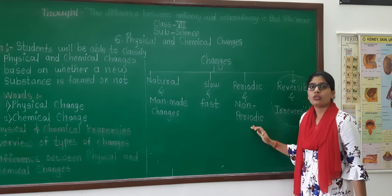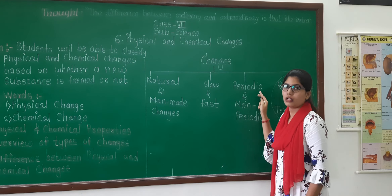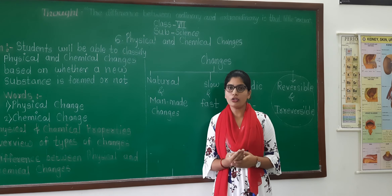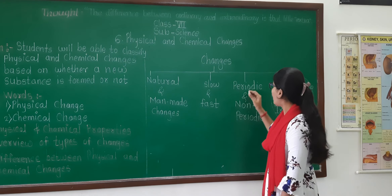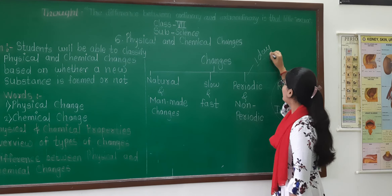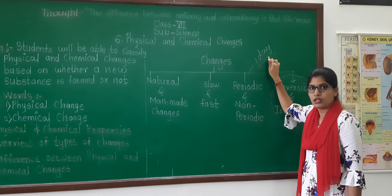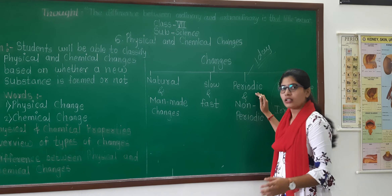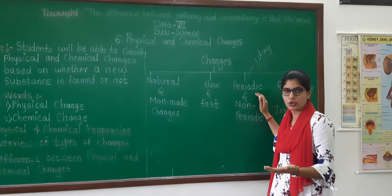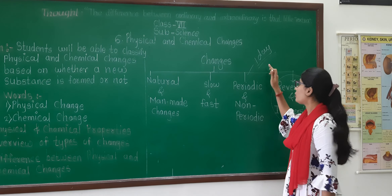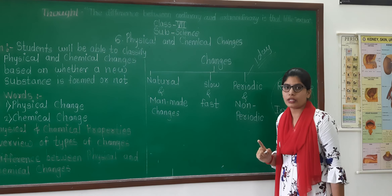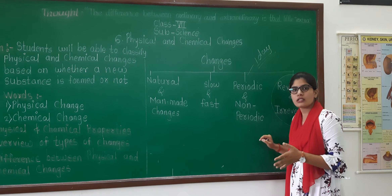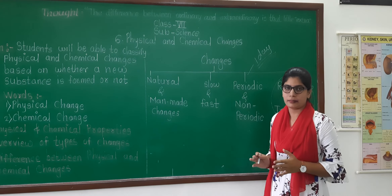Next is Periodic and Non-periodic. Periodic means the time is fixed. For example, the rotation of the Earth takes place in one day — 24 hours. Every rotation takes exactly 24 hours to complete, so that is a periodic change. Non-periodic means the change is there, but not in a fixed or perfect time.